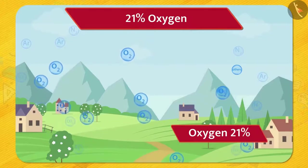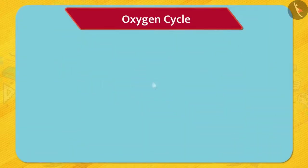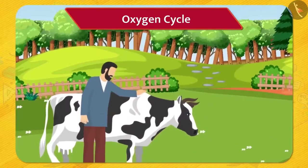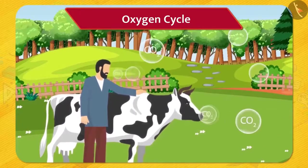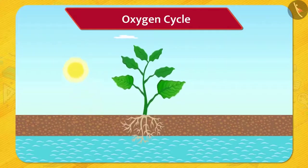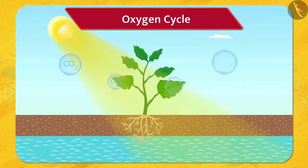Humans and animals take oxygen through the process of respiration and release carbon dioxide and water vapor. This carbon dioxide and water vapor is absorbed by the plants to prepare their own food and oxygen by the process called photosynthesis.